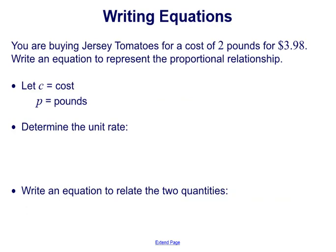So here's an example. You are buying Jersey tomatoes for a cost of 2 pounds for $3.98. Write an equation to represent the proportional relationship.